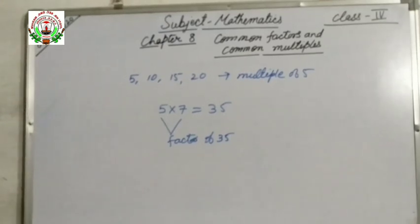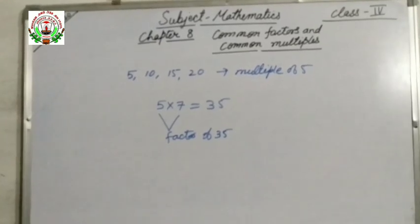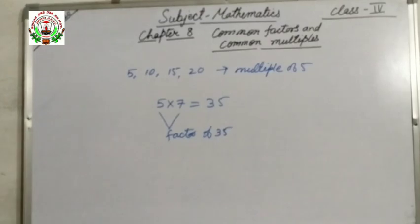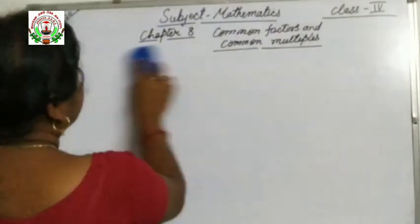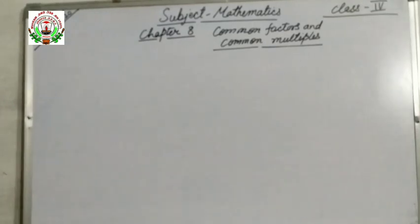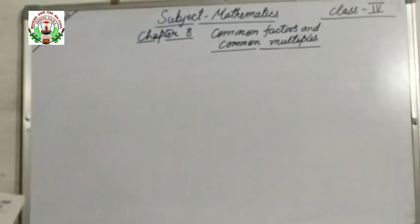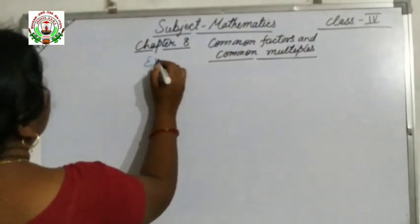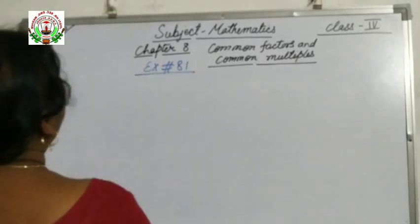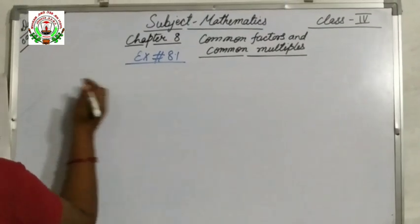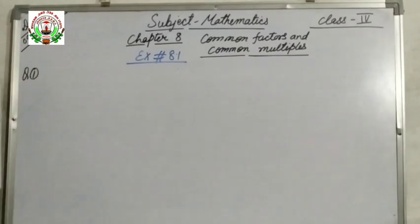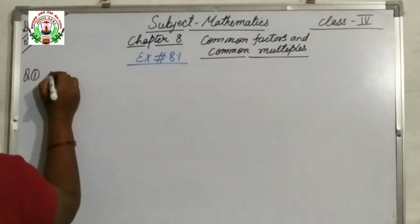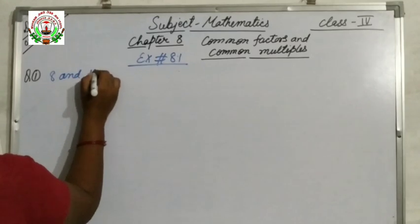Now today we will see common factors and common multiples. Before solving this lesson, let us start exercise 8.1. Question number 1 is: find the common factors of the 2 given numbers in each. Number 1 is 8 and 40.